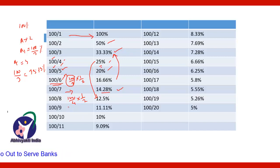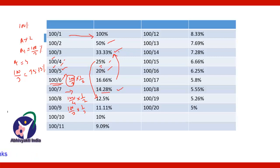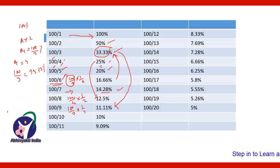Now 100 by 9 is 100 by 3 multiplied by 1 by 3, so it will be one-third of 100 by 3. And 100 by 3 is 33.33, so one-third of that is 11.11%. You can understand how to solve further ones — just remember 100 by 3 as 33.33 and take its half, one-third, or whatever is required according to the problem.